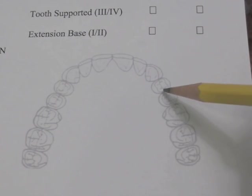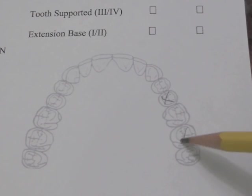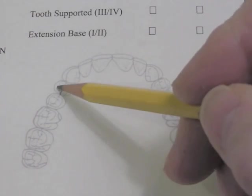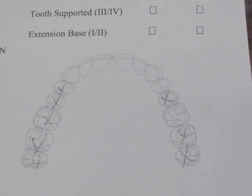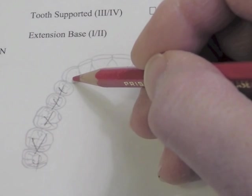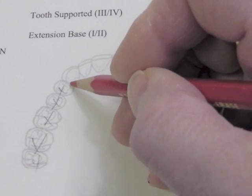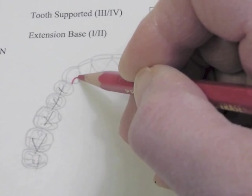First thing I do is cross off the missing teeth on the cast, on the paper that resembles the cast. For our design, we called for a clasp assembly on this canine, and the canine has to have a cingulum rest.